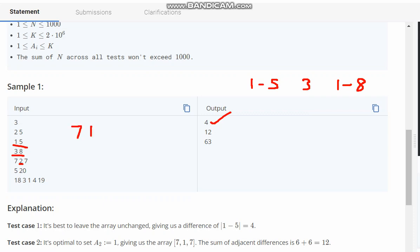Replacing 2 with 1 gives 7, 1, 7. This would give us the difference of 6 and this also 6. 6 plus 6 would give us 12 which is the output.